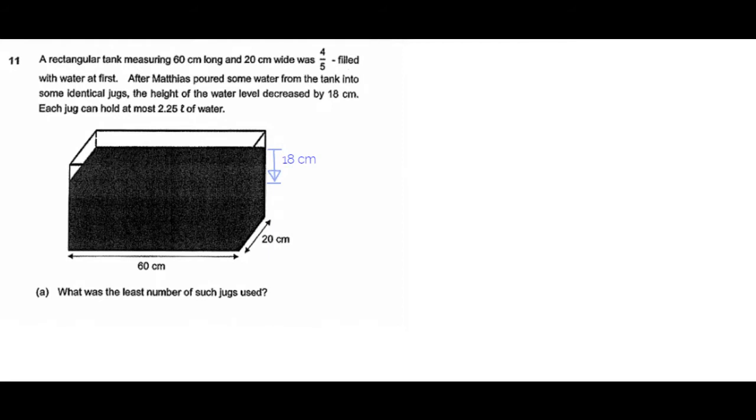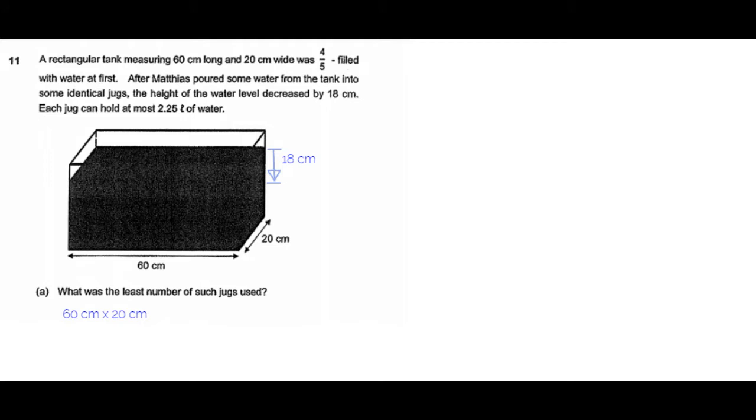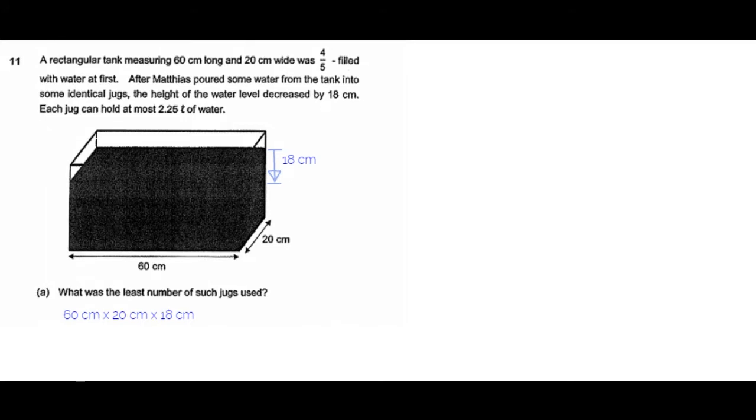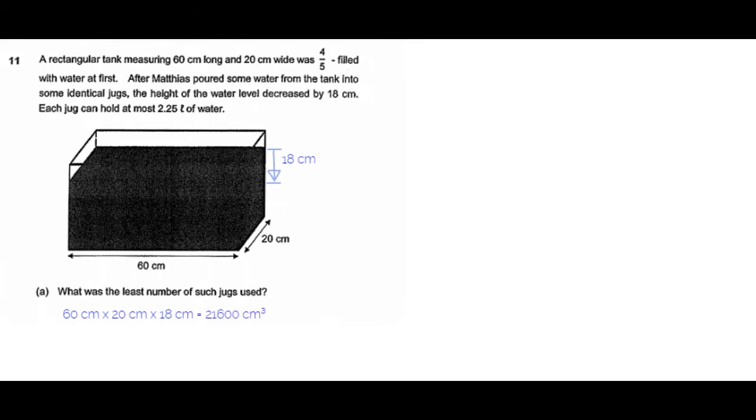Initially four-fifths filled, the water height reduced by 18 cm. The length and width of the tank is given to be 60 cm by 20 cm. So the volume of water that was poured out is 60 cm times 20 cm times 18 cm, which is equal to 21,600 cm³, which we convert to litres is 21.6 litres.